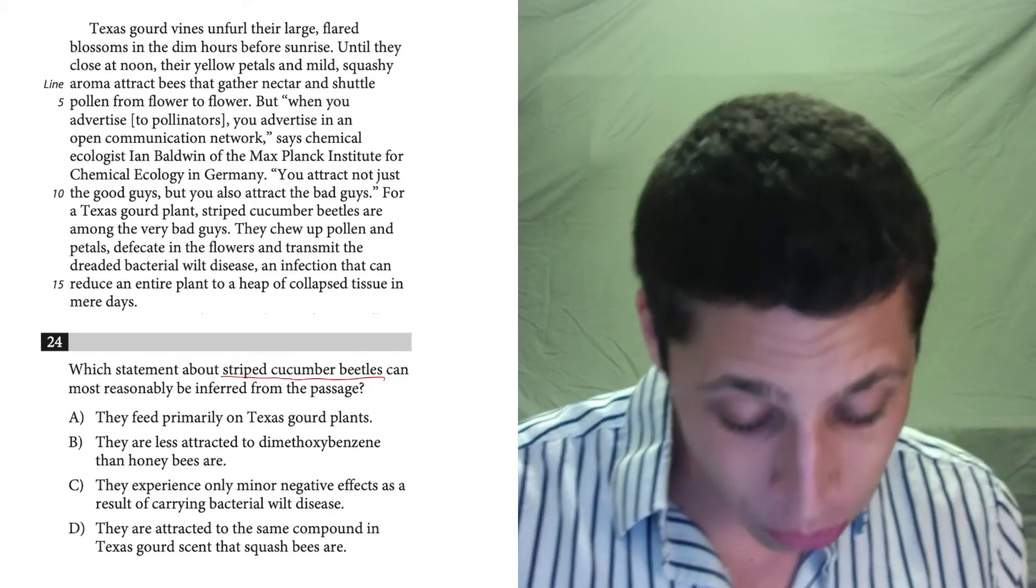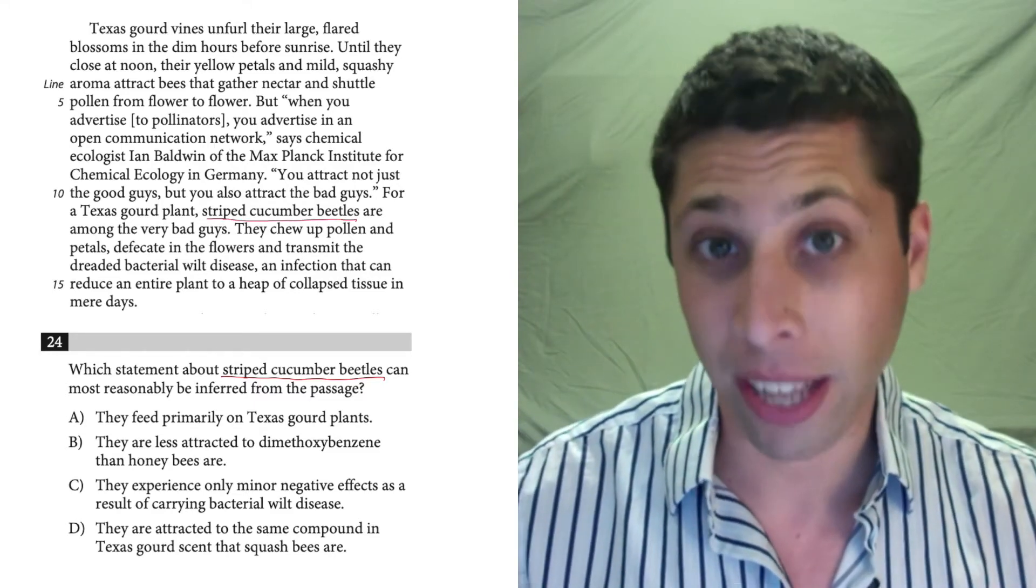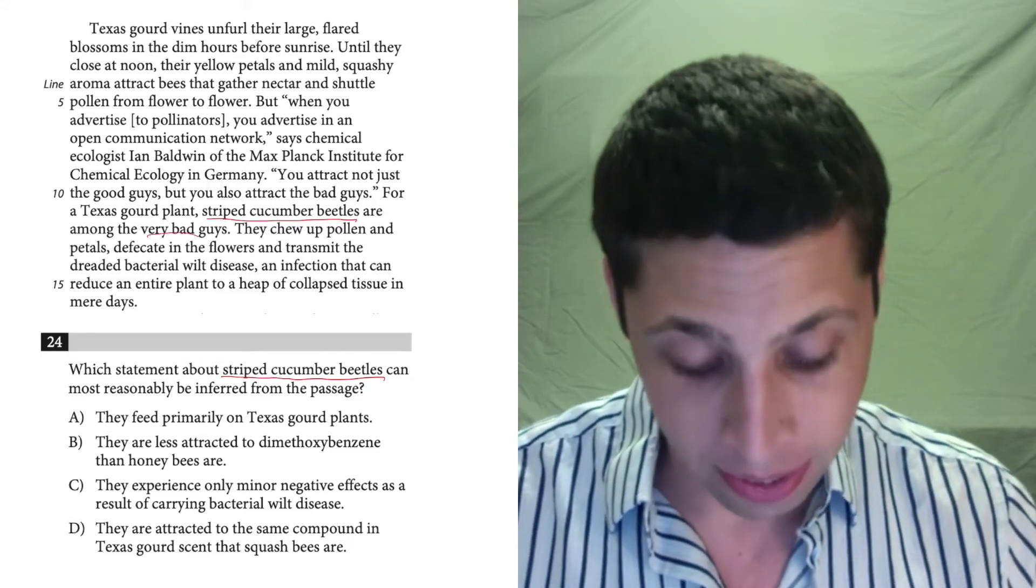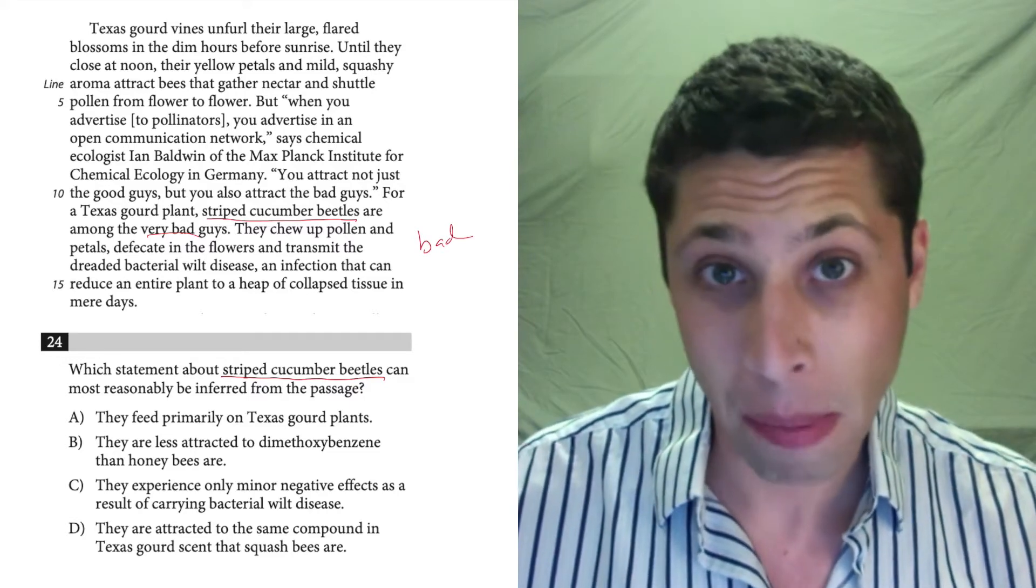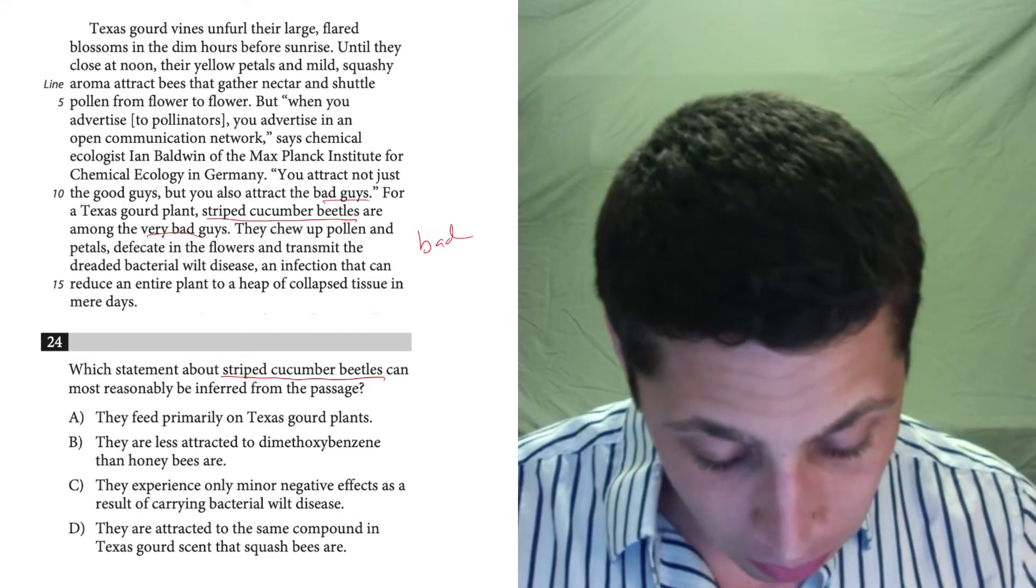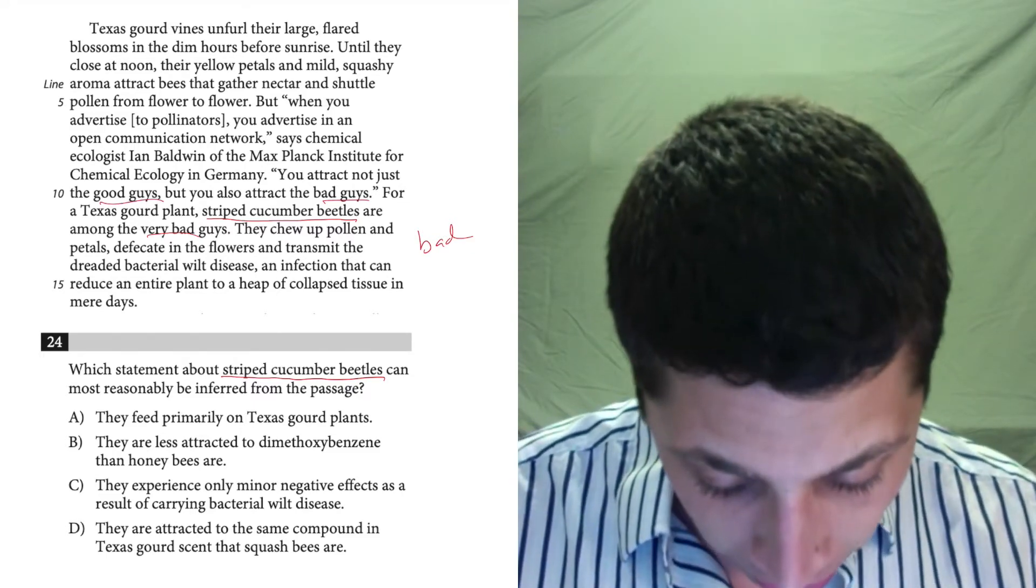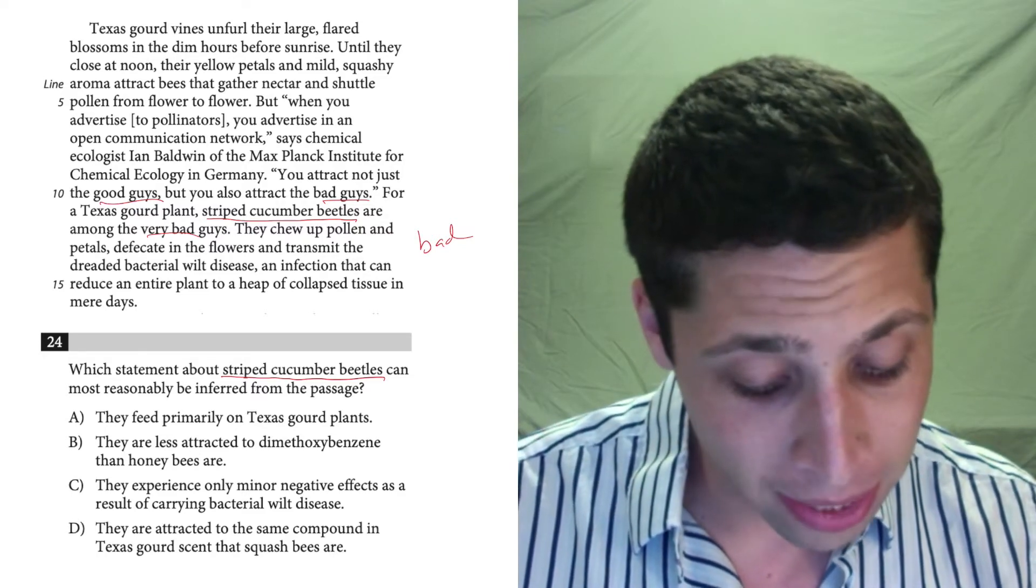If I look, I do see that that phrase, striped cucumber beetles, is right there in line 11. Reading around it, I can tell that they're bad. So that's something to maybe help me. But why are they talking about these things? They're the bad guys as opposed to the good guys. And what they're really talking about here is these plants and these bees.